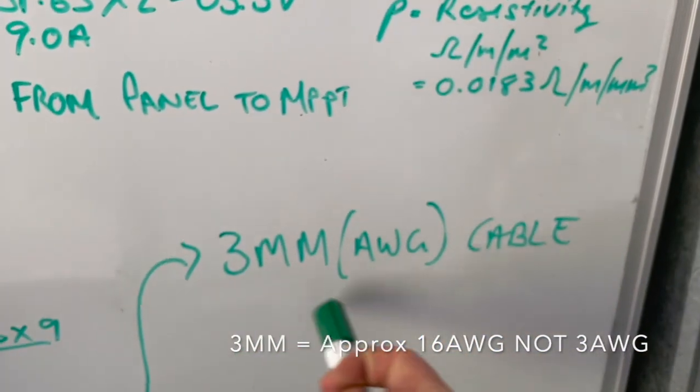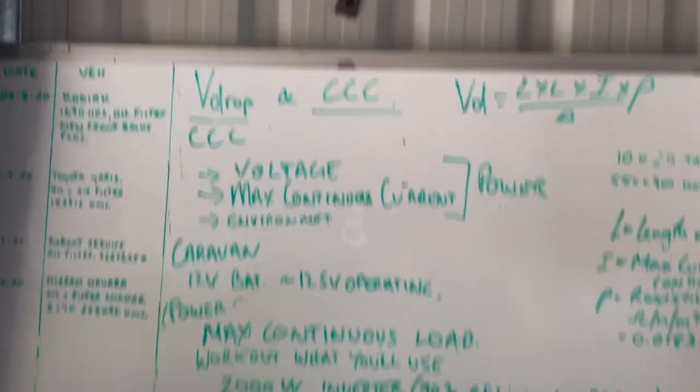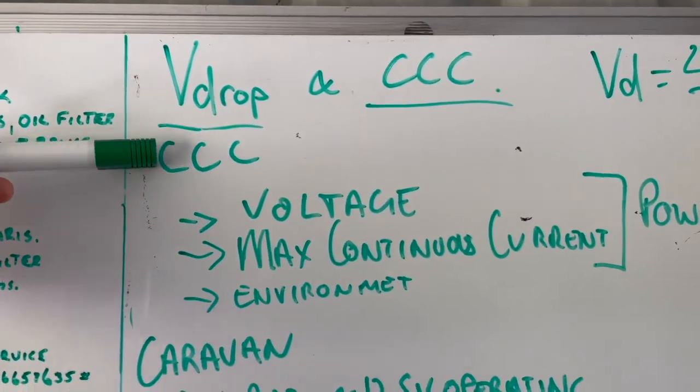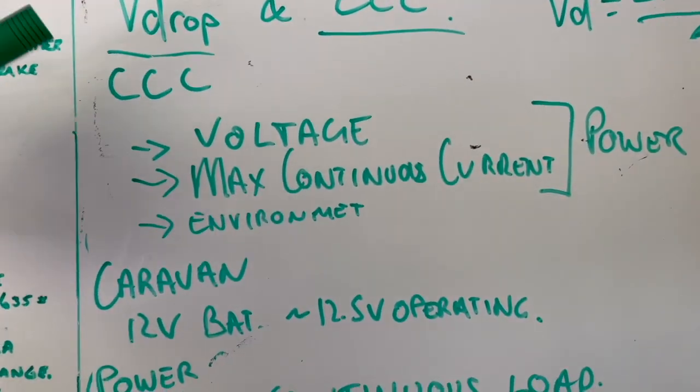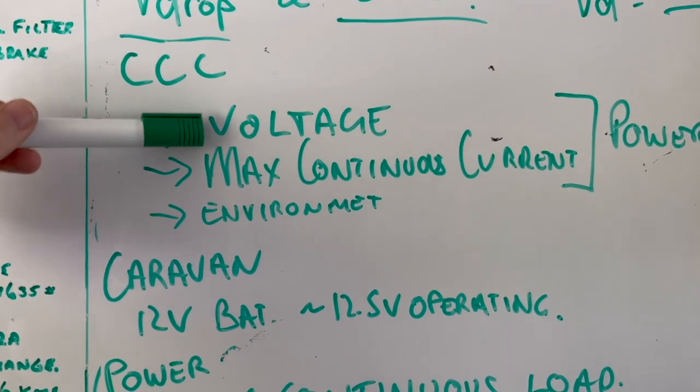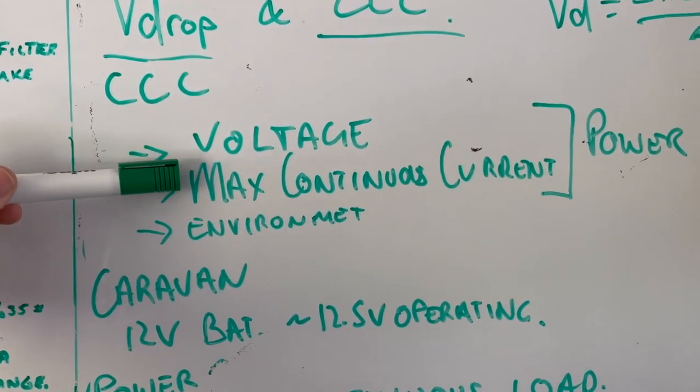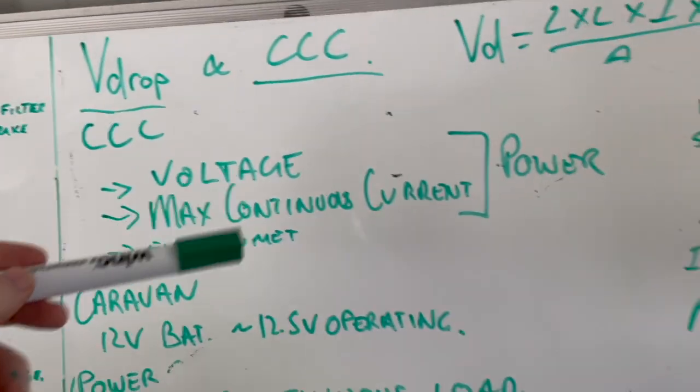So now we're checking the current carrying capacity of the cable. The two things you really need to know is the voltage and the maximum continuous current, which is that's just the power of your system.